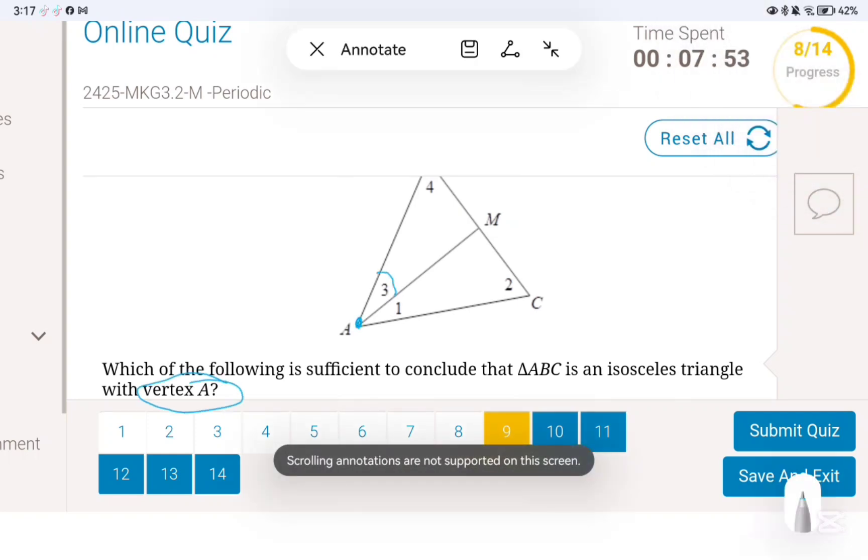Here it is the same like question one. So here they told us that A is a vertex, which means angle 1 and angle 3 are congruent, and AM is perpendicular to BC.